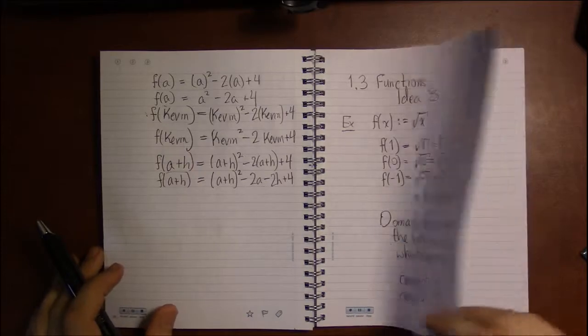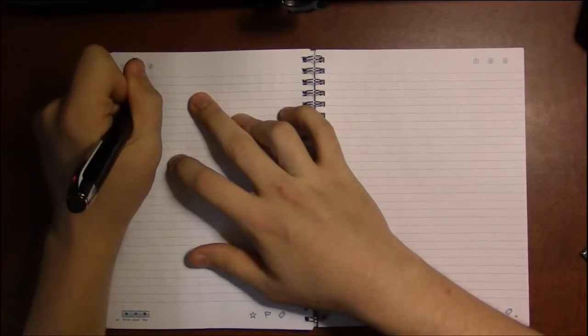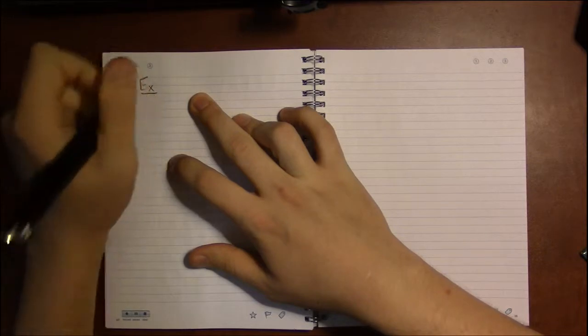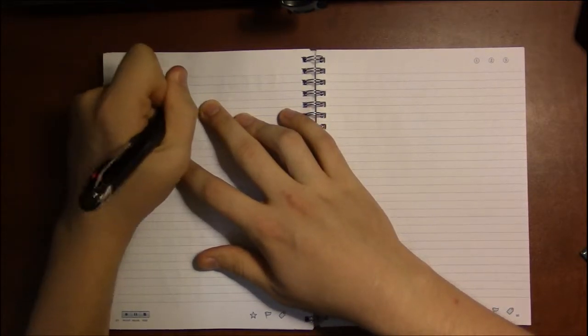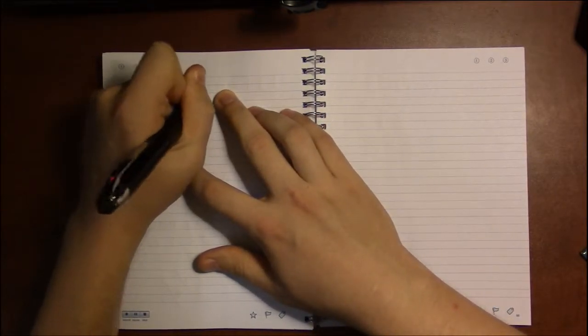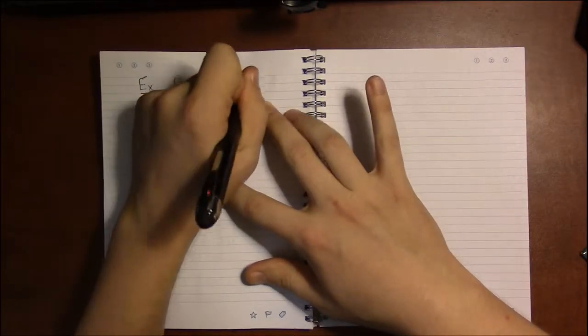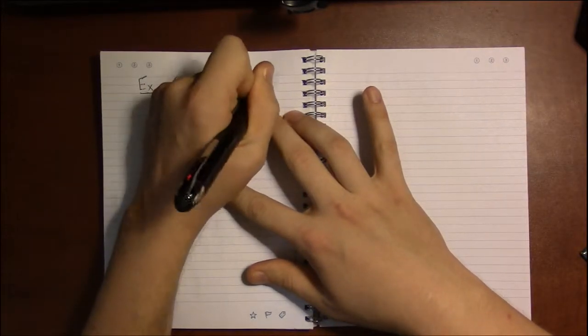So, for example, earlier we looked at the function f(x) = x² - 2x + 4. Very simple function.